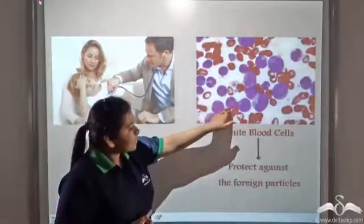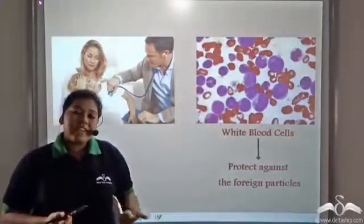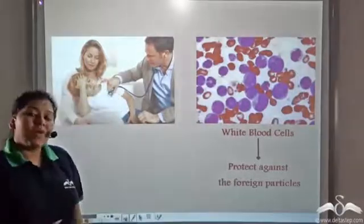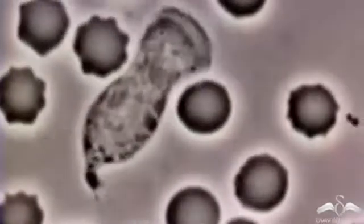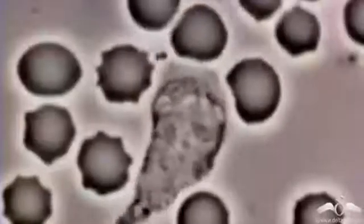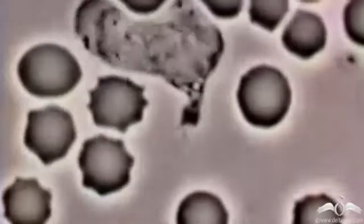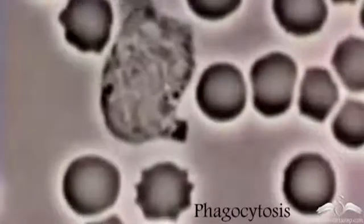The white blood cells protect against foreign particles that enter the body and cause harm. White blood cells do not have a fixed shape — they continuously change their shape until they can engulf the foreign particle. This entire process of engulfing a foreign particle is known as phagocytosis.